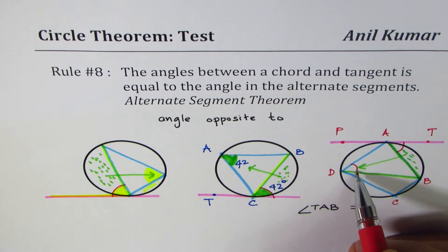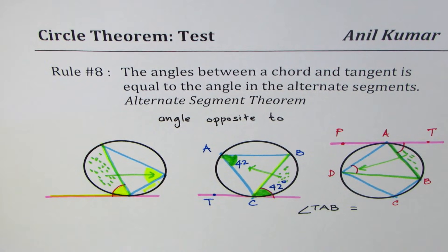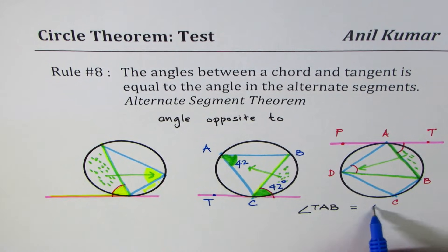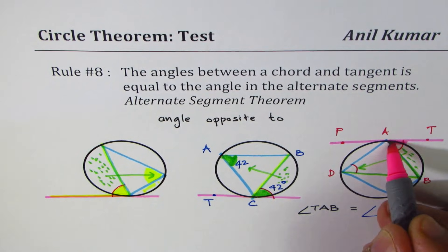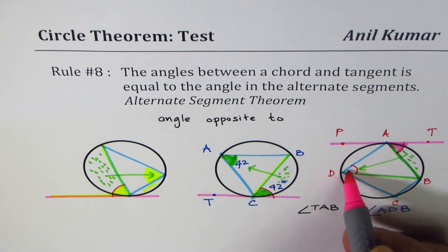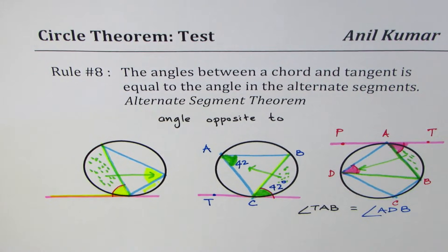In the triangle, the opposite side is that, so the angle should be angle ADB. What we get here is angle ADB. Do you get it? Perfect. So the angle TAB should be equal to angle ADB.